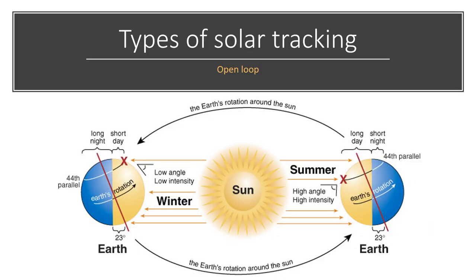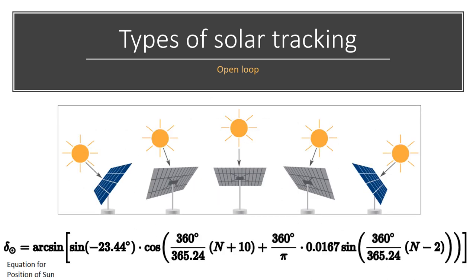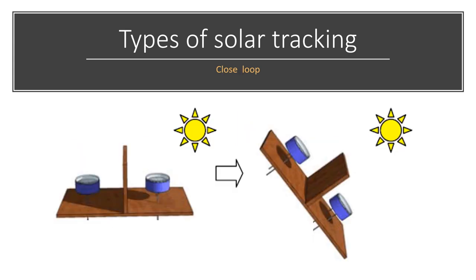Now we consider types of solar tracking system. First one is open loop tracking. The position of the sun in the sky is a function of both the time and geographic location of the observation on the earth's surface. As the position of the sun can be determined, the panel can be programmed to rotate using falsification rules.